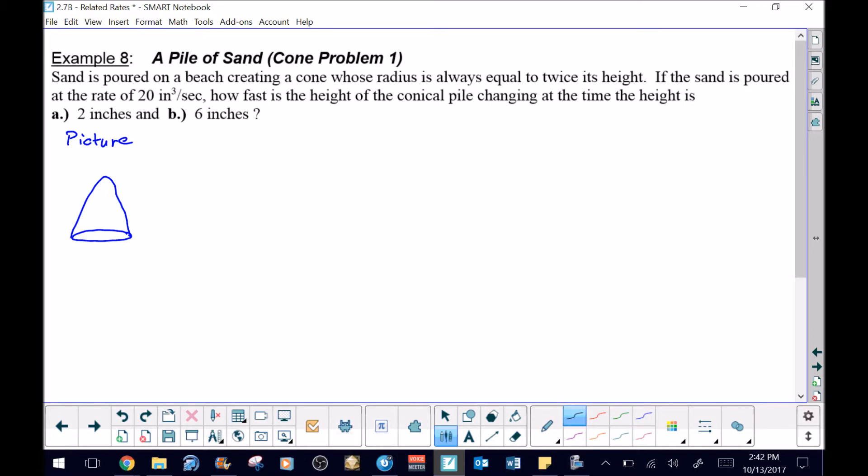Then you start thinking about this picture. You start thinking about, well, what do we know about this cone? This cone has a height, and that height h is going to vary—that's why we're going to use a variable. We also know that this cone is going to have a radius r that's going to change. But outside of that, we don't know much more about this cone.